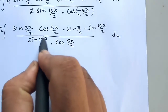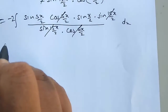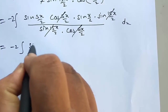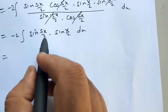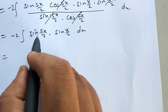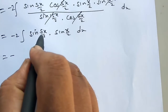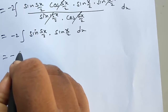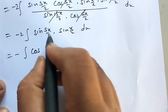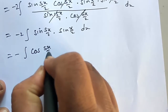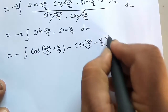Now we cancel the common factors. Sin(15x/2) and sin(15x/2) get cancelled. Cos(5x/2) and cos(5x/2) get cancelled. So this equals minus 2 integration. Here what remains is sin(5x/2) into sin(x/2) dx. Again using the product formula, converting product into sum or difference: 2 sin A sin B. So this is equal to cos((5x/2) minus (x/2)) minus cos((5x/2) plus (x/2)), bracket complete dx.